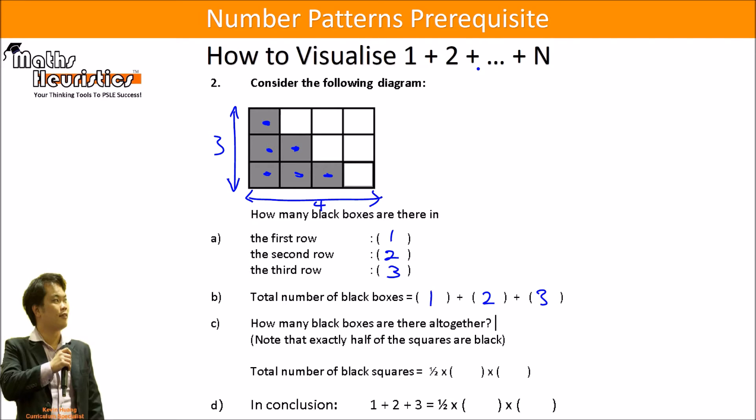So how many black boxes are there altogether? Again, half of the rectangle is shaded, so we can say that half times 3 times 4. That's the total number of black squares. So in conclusion, 1 plus 2 plus 3 is equal to half times 3 times 4.